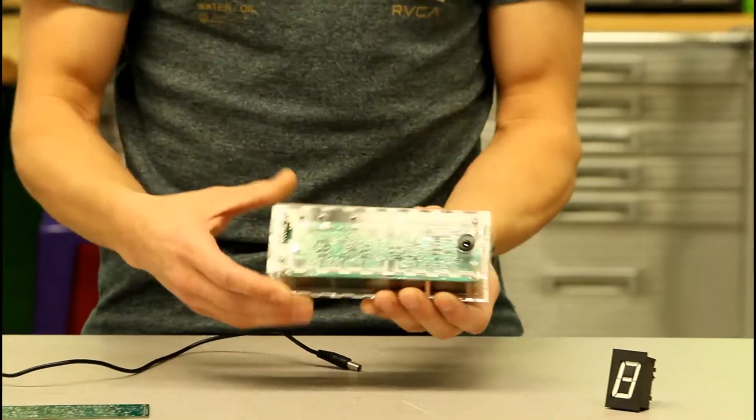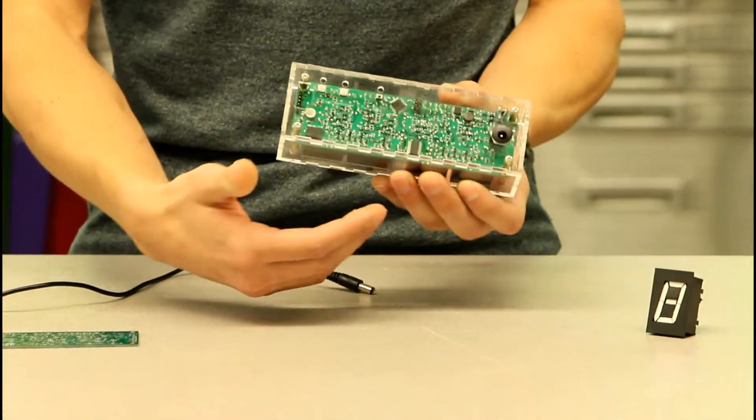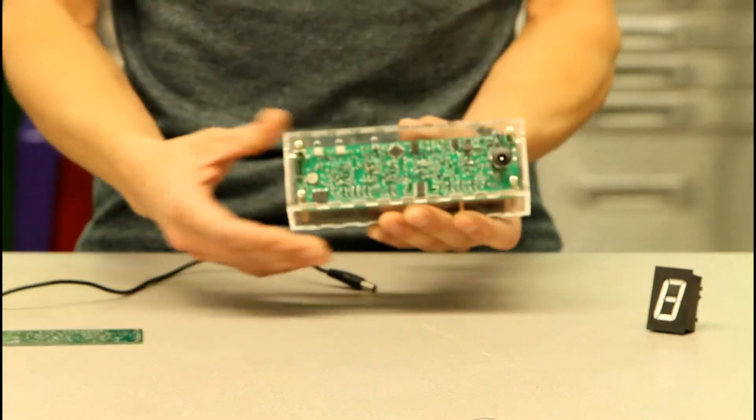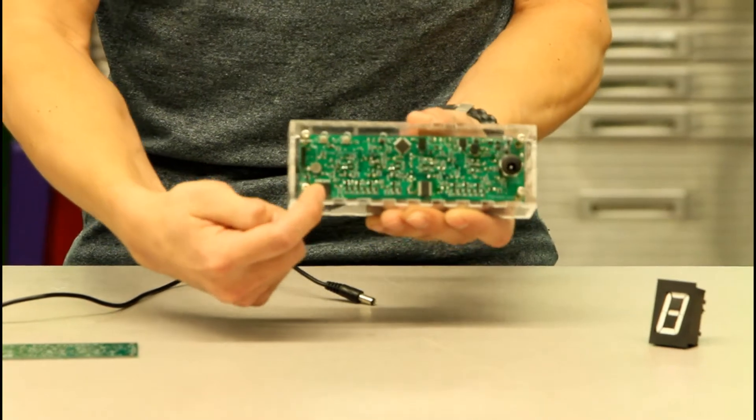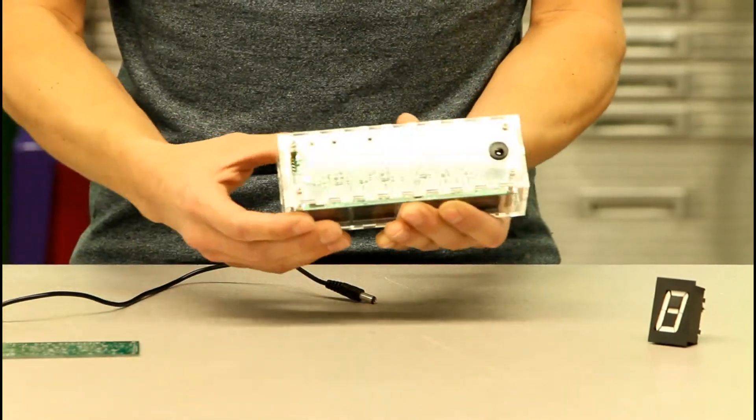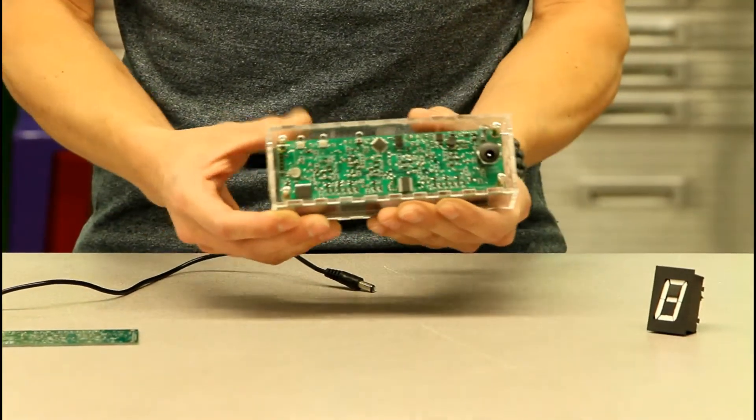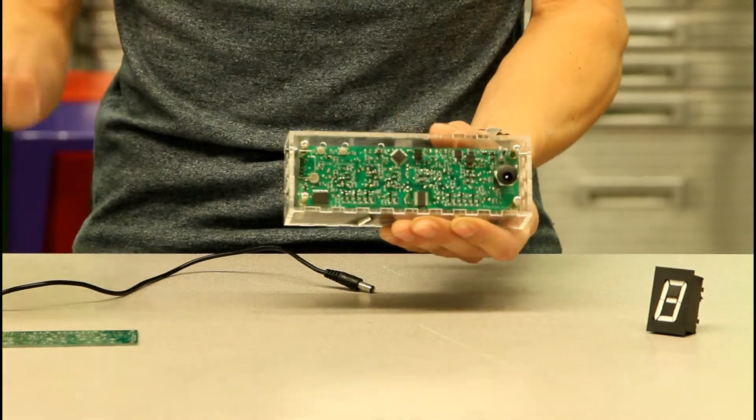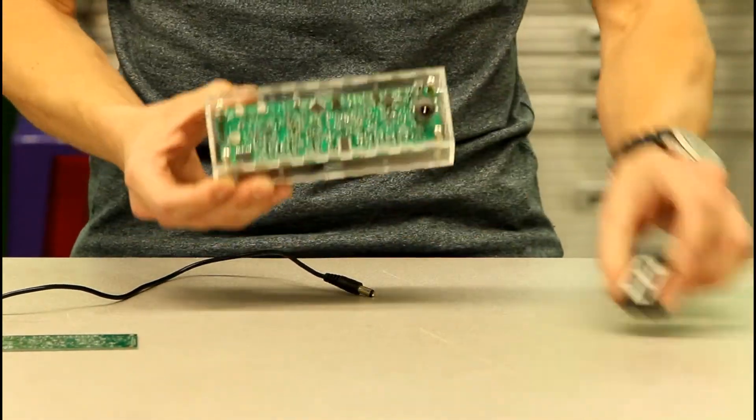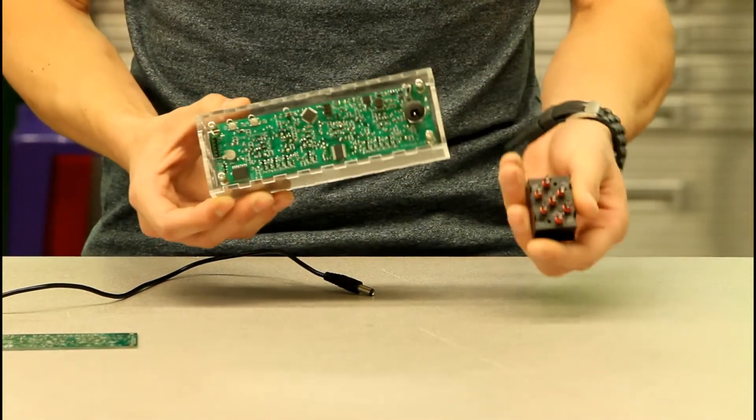If you actually look at the back of this clock, we have a microcontroller that controls everything, obviously. We have a real-time clock chip which keeps time. We have an IO expander chip which allows me to use more IO pins on the microcontroller because we're driving so many of the actual electromagnets.